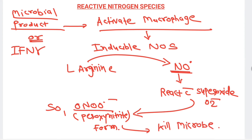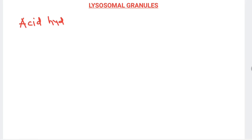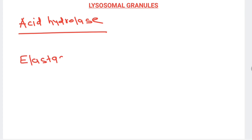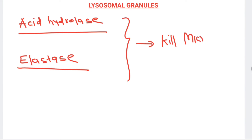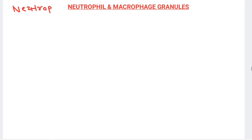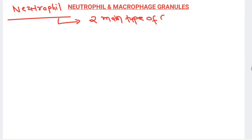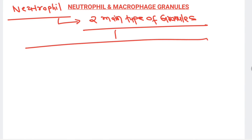So there are three powerful microbicidal agents: hydroxyl radical, HOCl, and peroxynitrite. The third powerful microbicidal category is lysosomal granules, which contain acid hydrolases and elastase that can kill microbes. The fourth category is neutrophil and macrophage granules, which also kill microbes.